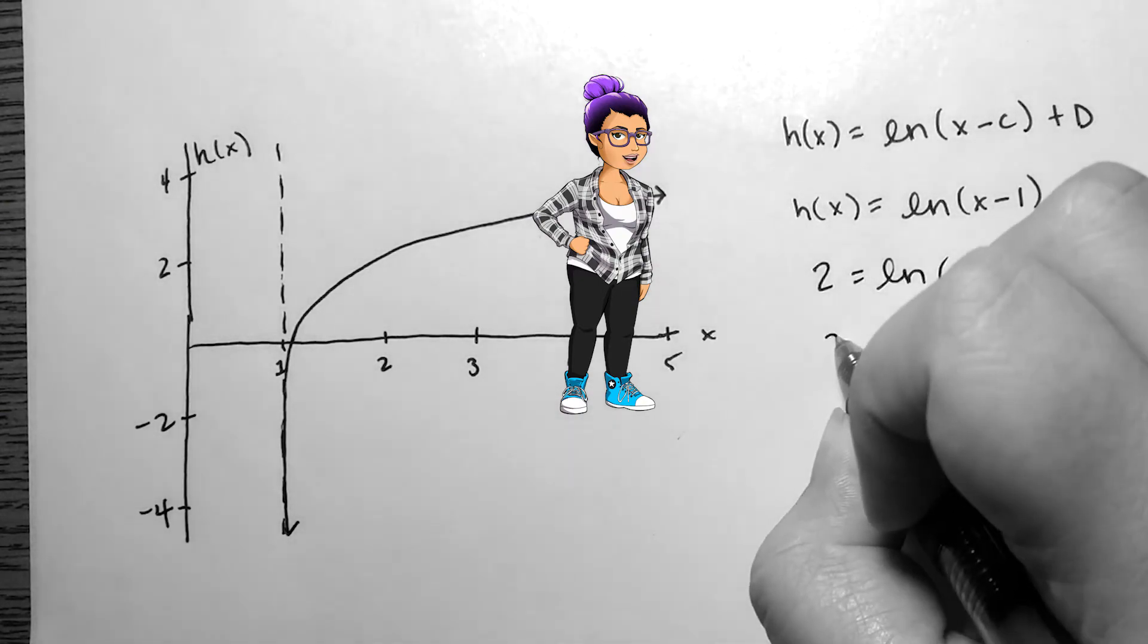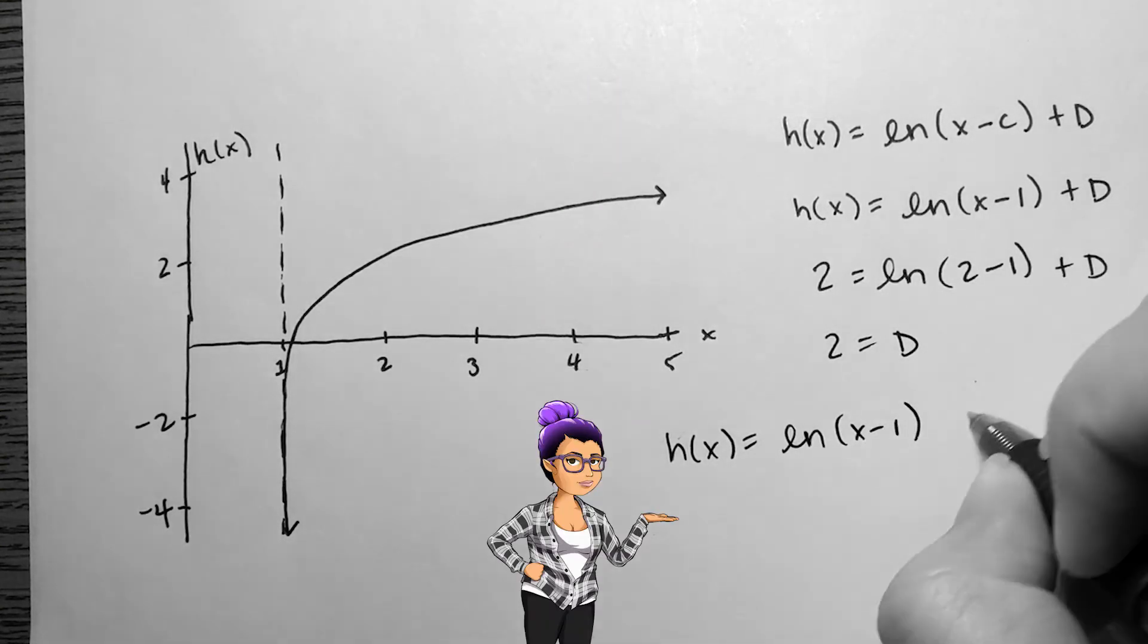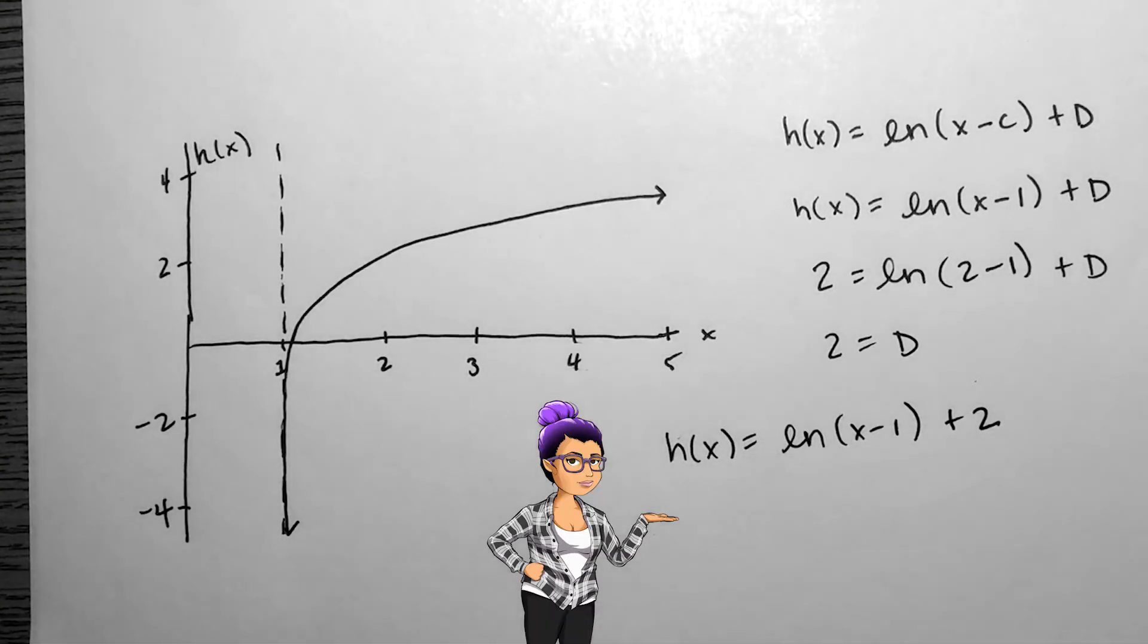Since log with any base of 1 is 0, I find that d is 2. So our equation is natural log of x minus 1 plus 2.